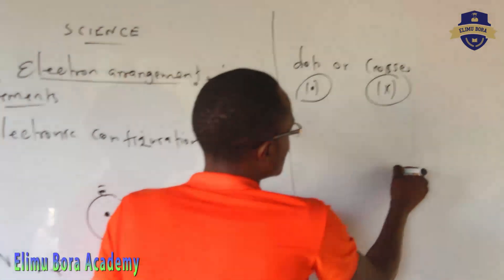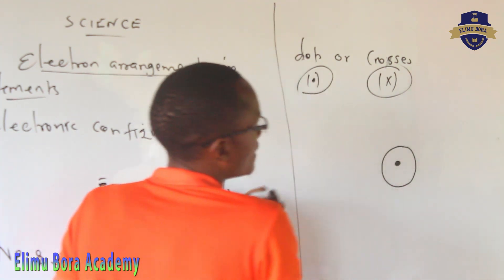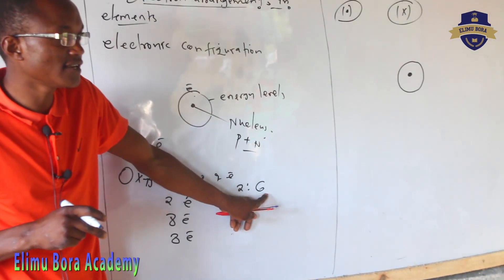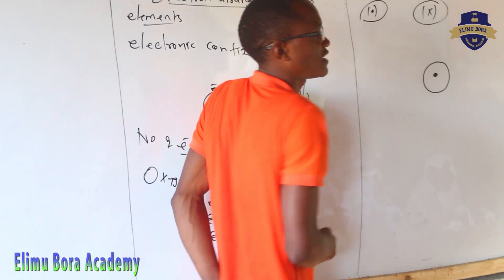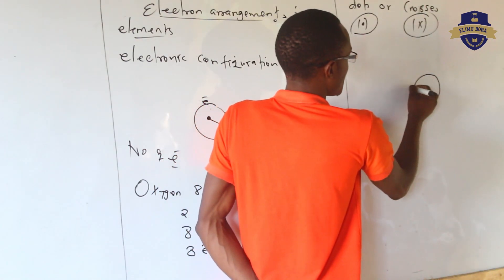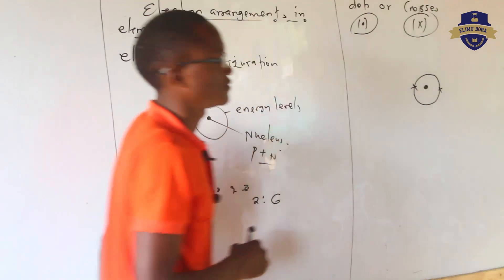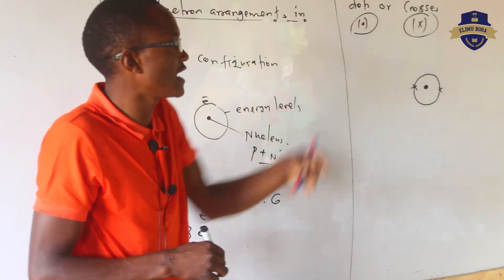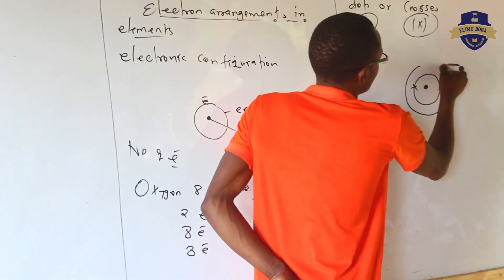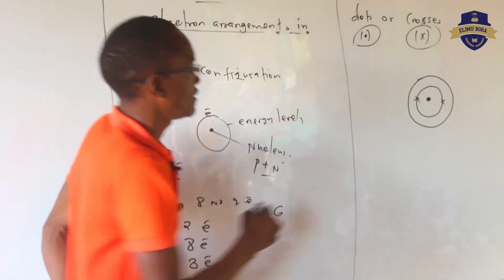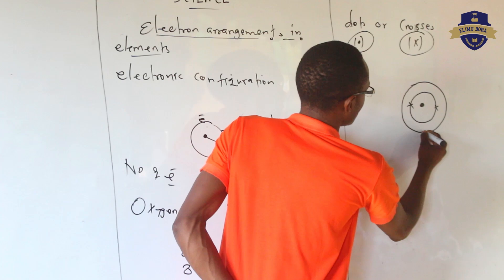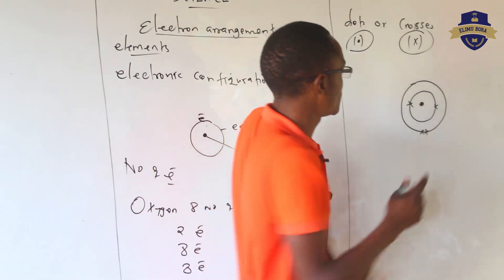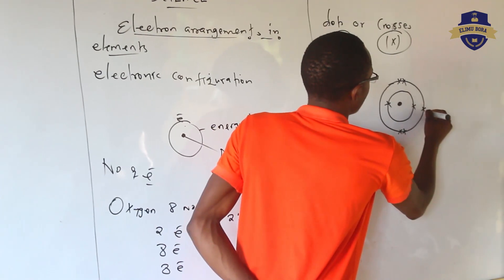We start with the nucleus, then come to the first energy level. For oxygen the configuration is 2:6, so we only have the first and second energy levels. The first energy level has a maximum of two — so one, two. Then the six electrons are transferred to the next energy level. Remember, electrons move in pairs — so that is one, two, three, four, five, six.